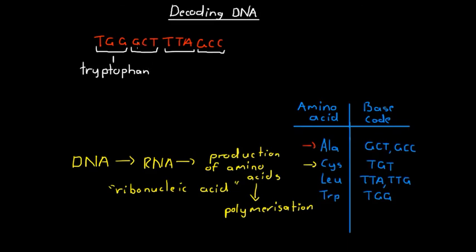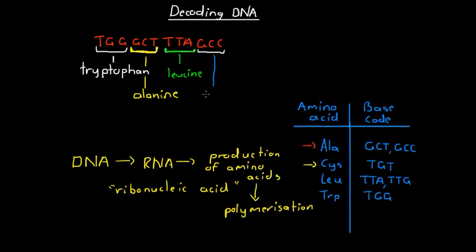The next triplet, GCT — guanine, cytosine, thymine — indicates that alanine needs to be produced. Following that, TTA indicates that leucine needs to be produced, making leucine the next amino acid. Finally, GCC — guanine, cytosine, cytosine — indicates that we need to produce alanine again.